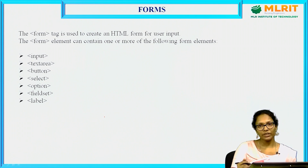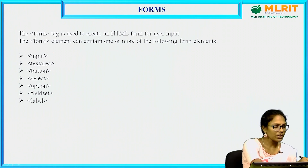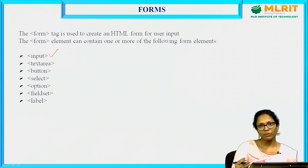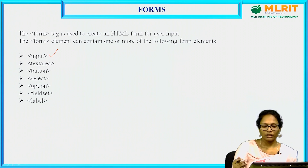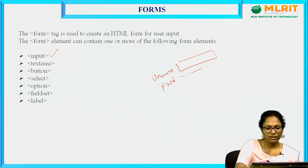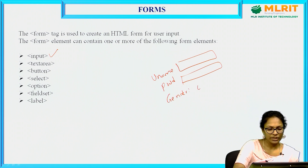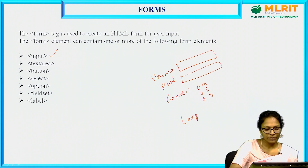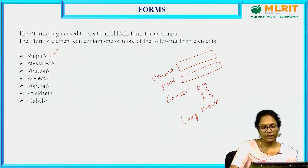In the form tag, what are the different elements we can use? The first one is input. If you want to provide some input — it may be text, a password, or a checkbox. For example, I have an application where I want a username, a name, a password, and I need to give the gender using radio buttons: male, female, others. And I am also giving languages known, where users may know multiple languages, so for that purpose I am using checkboxes.